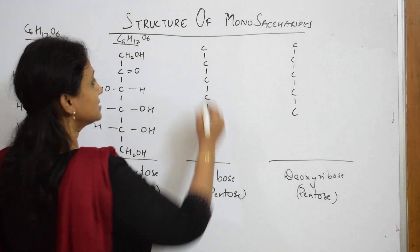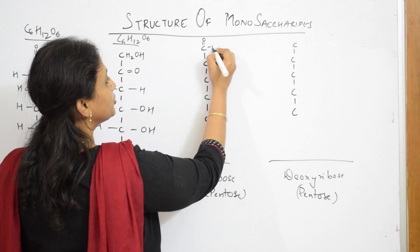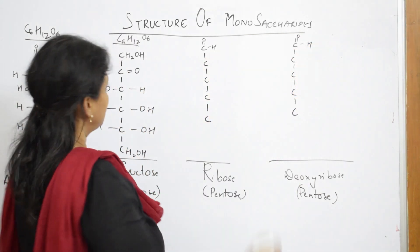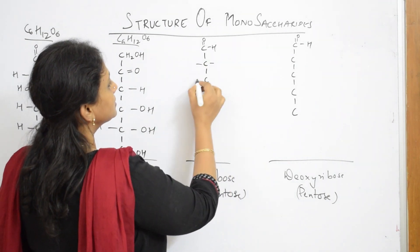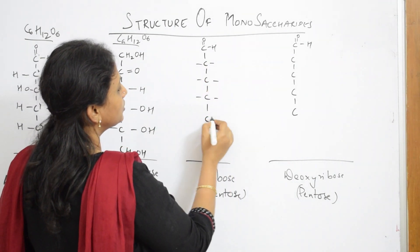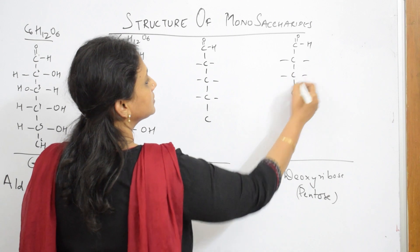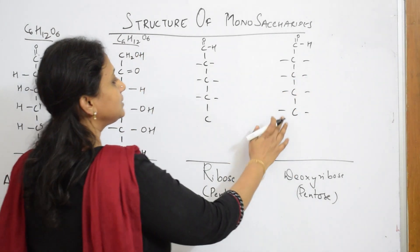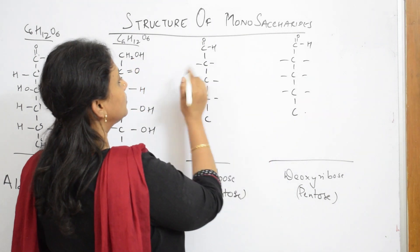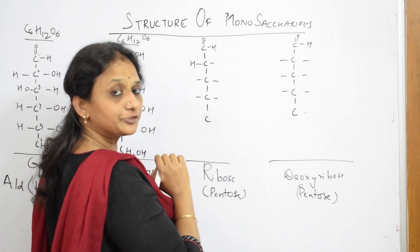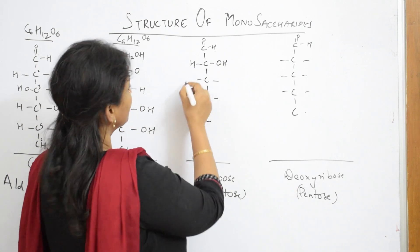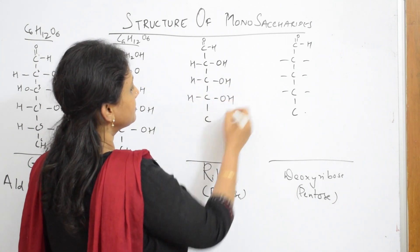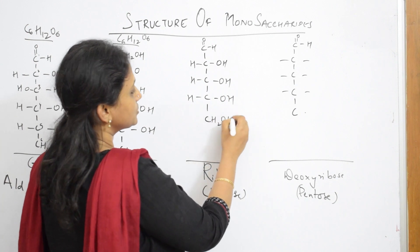This also has an aldehyde group in the first carbon. In the second carbon, we have H and OH. Third again, same. Fourth again, same. And fifth has CH2OH.